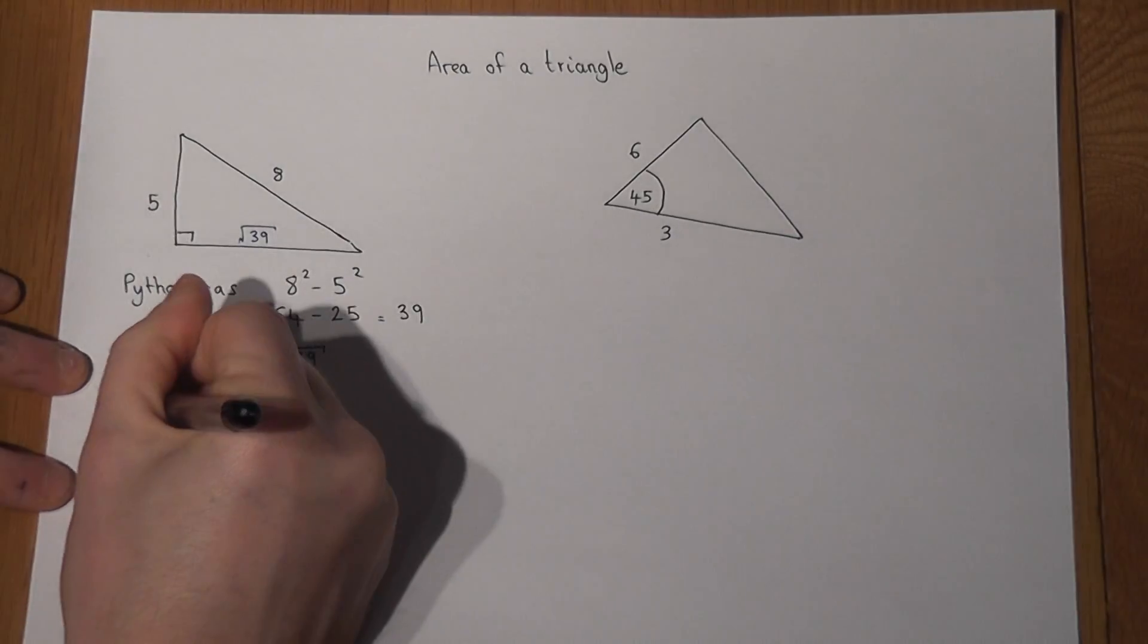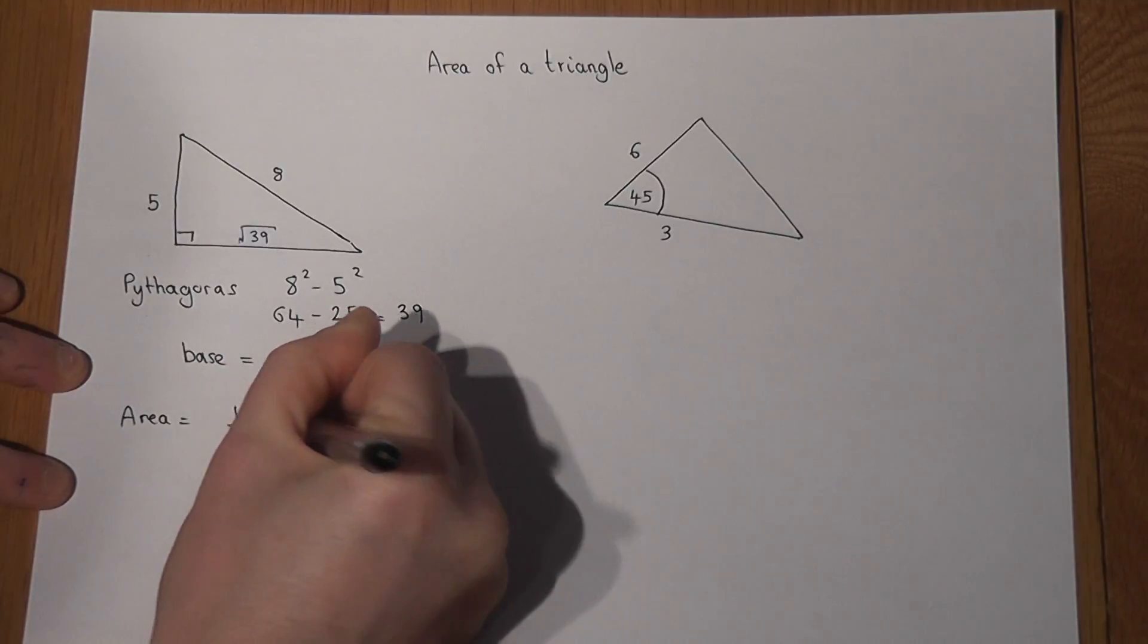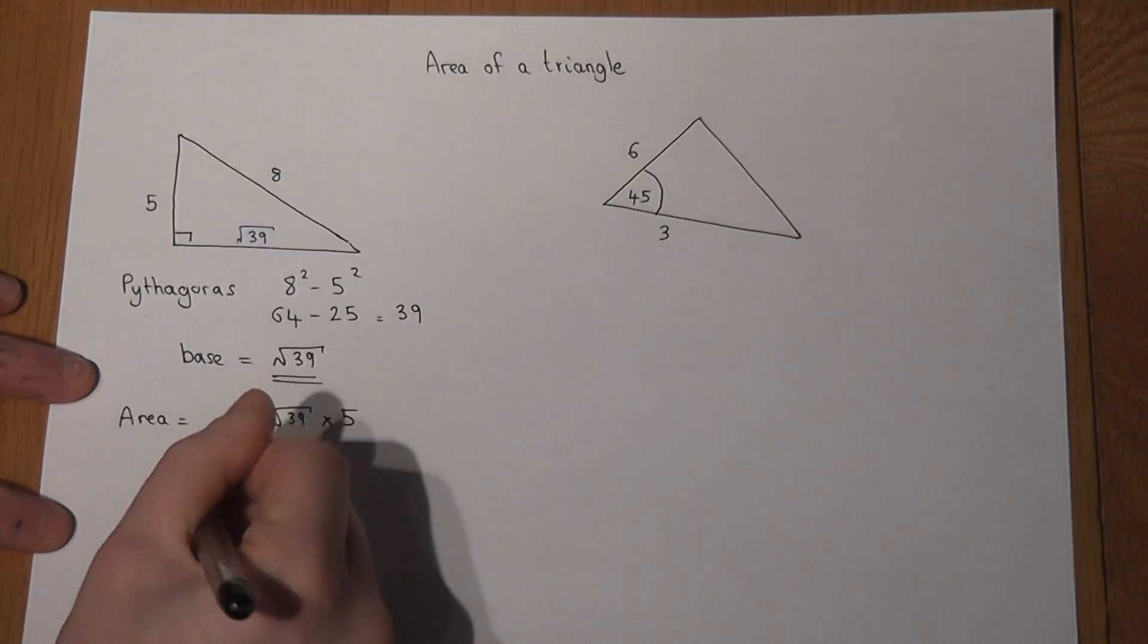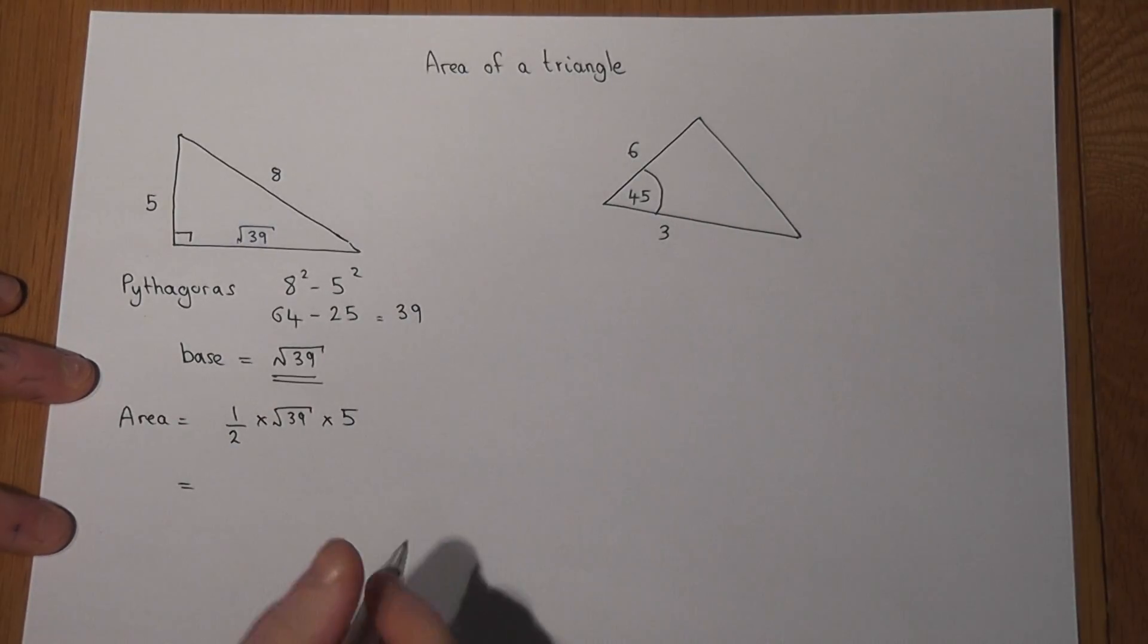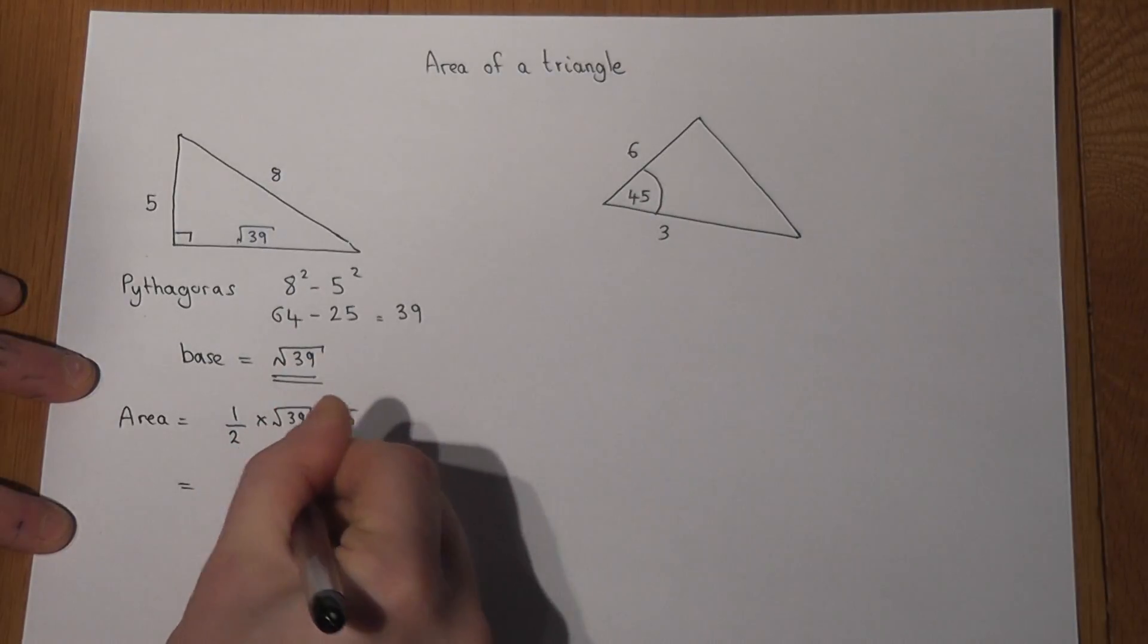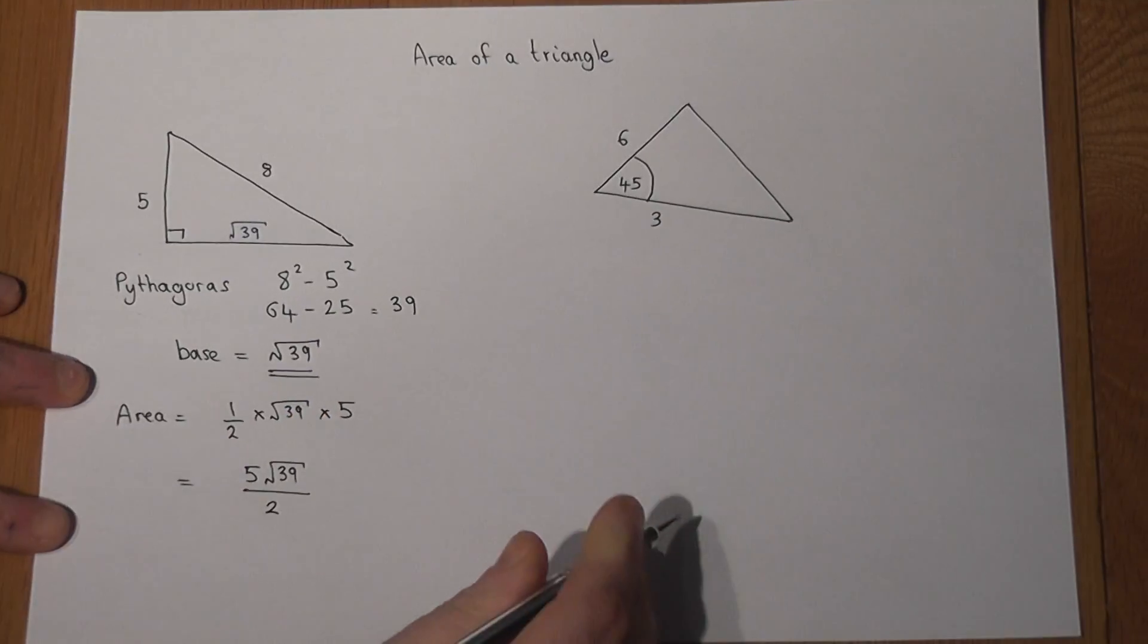So therefore the area now just equals a half times base times height, which is the same as a half times root 39 times 5, which equals 5 root 39 all over 2.